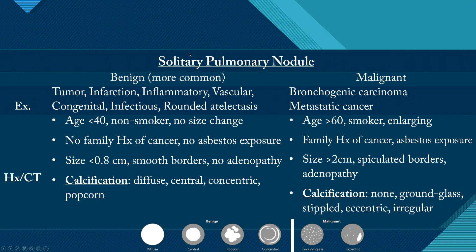Solitary pulmonary nodules can be benign — which is the more common finding — or they can be malignant. There are many causes of benign nodules such as benign tumors, hemangiomas, lung infarctions, inflammatory or infectious processes, vascular or congenital problems, and rounded atelectasis — all presenting as nodules less than three centimeters. For malignant nodules, we're talking about carcinoma, metastatic cancer, and lymphomas.